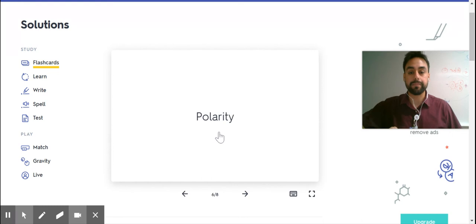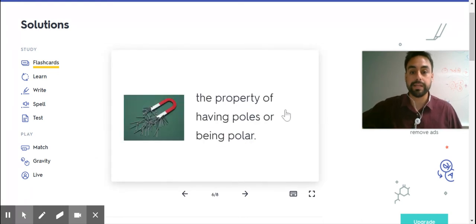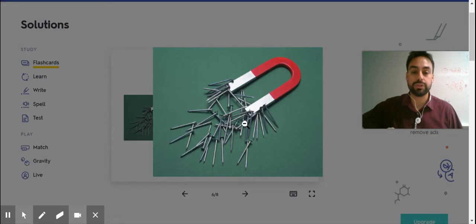Polarity. The property of having poles or being polar. Like this picture of a magnet. This magnet is polar.